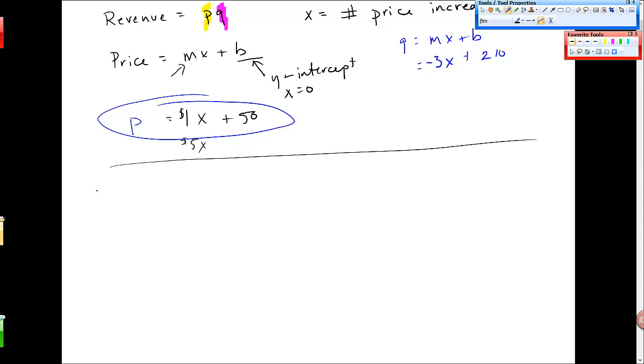Okay. So then I have revenue is p times q, which is x plus 50 times negative 3x plus 210. Okay.